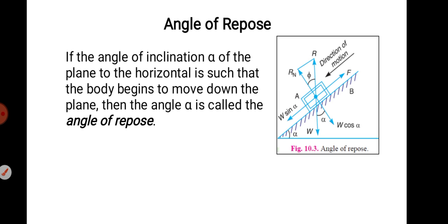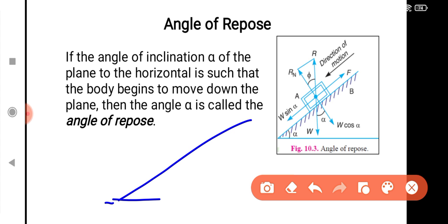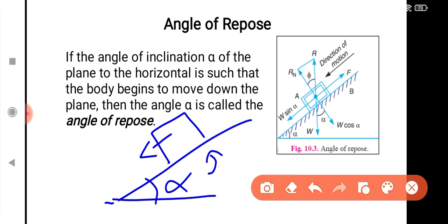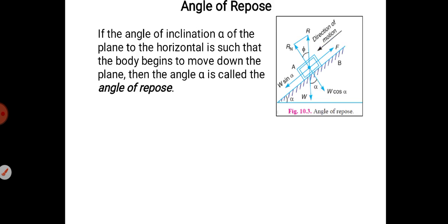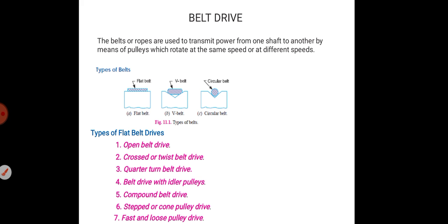That is the angle of repose. The angle of repose is one of the inclined road or inclined plane, which is alpha. If the alpha is increased, one certain angle of repose is reached — that is the angle of repose. The angle of repose is the angle at which an object just begins to slide.